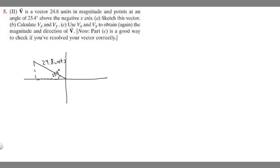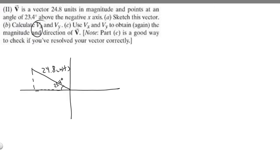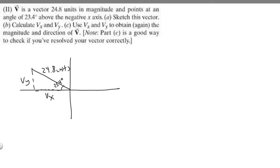This is our vector, and then we're trying to calculate V sub x and V sub y. We know that V sub y and V sub x are just vector components. V sub y is going to be this vertical component, so this length, and V sub x is going to be this horizontal component. What we need to do is solve for these using trig — we're going to use the cosine and sine functions to solve for both of them.